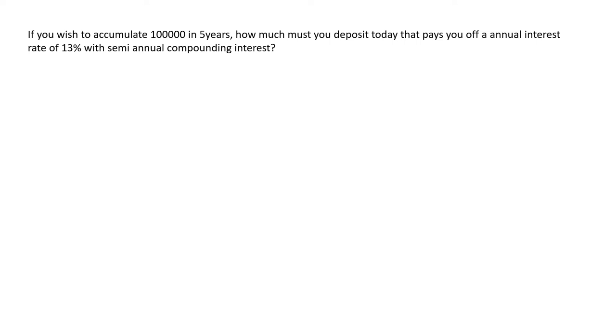Let's see this question. If you wish to accumulate 100,000 in 5 years, that means we have the future value here and N. How much must you deposit today? They want us to find the present value. That pays you off annual interest rate of 13% with semi-annual compounding interest. That means we will be getting interest 2 times, 6 months and 6 months. If it says quarterly it would be 4, if weekly it would be 52. It is denoted by T in our formula.